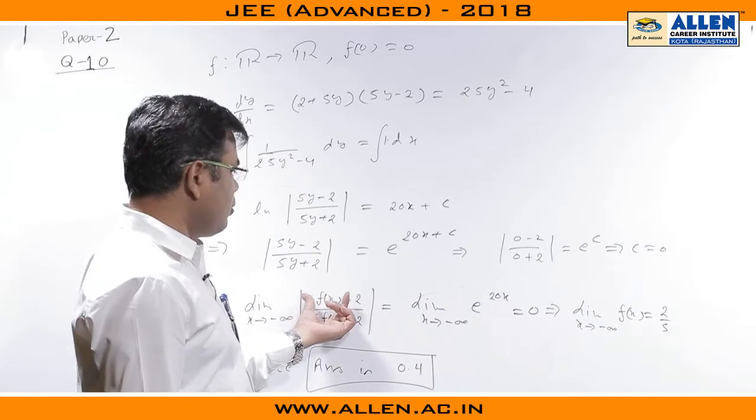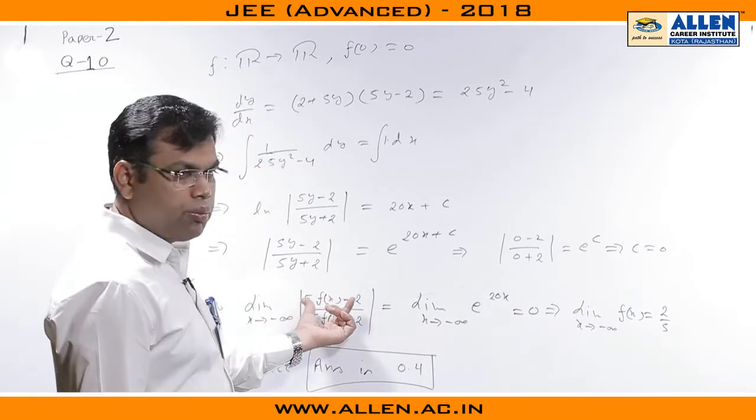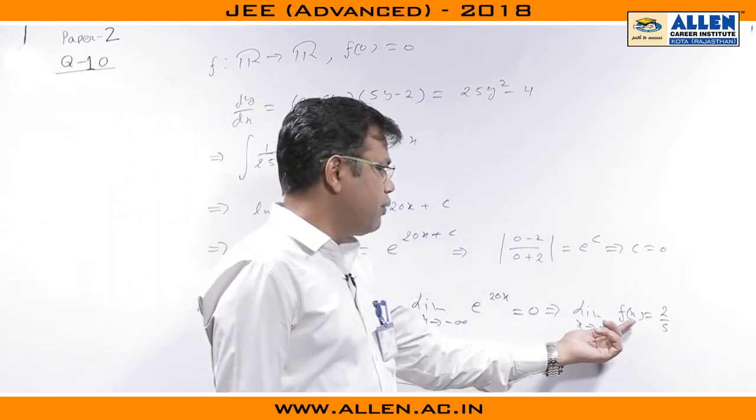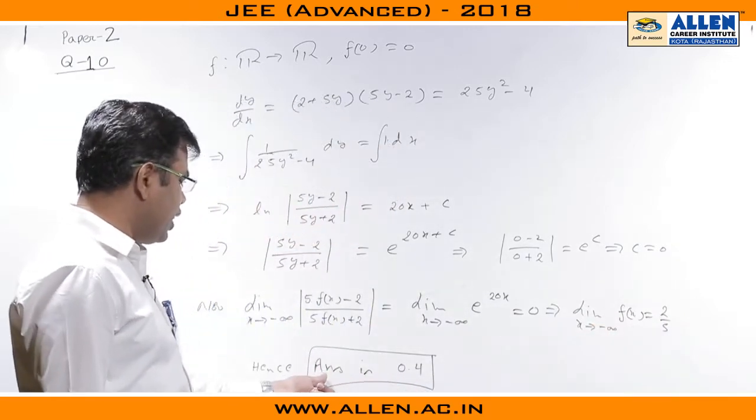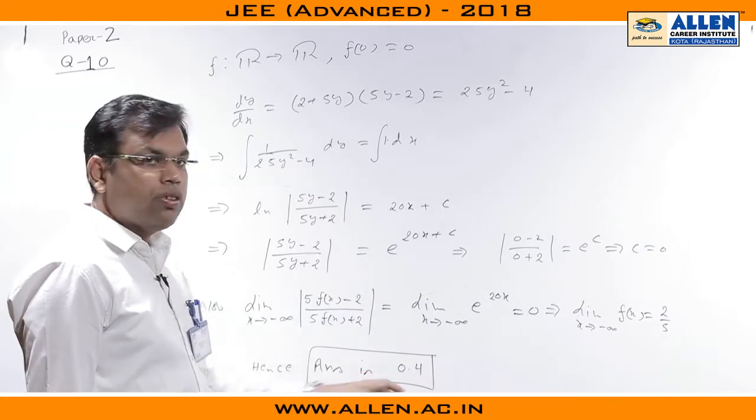The limit of numerator must be 0. Since the limit of numerator must be 0, limit x tends to minus 1 of f(x) must be 2/5, which is nothing but 0.4. The final answer of this integer type problem is 0.4.